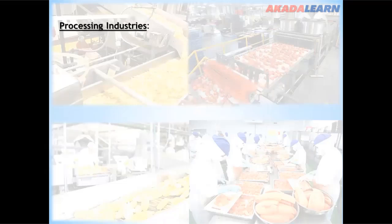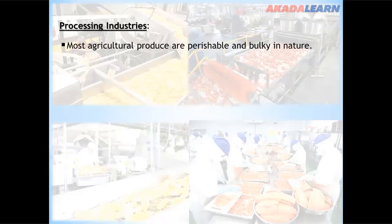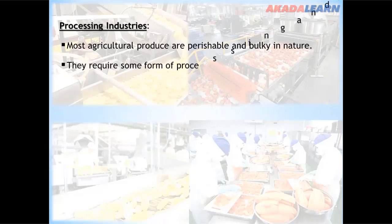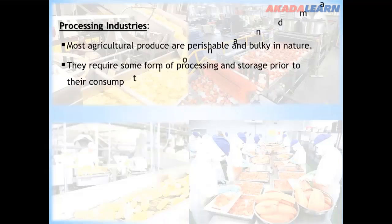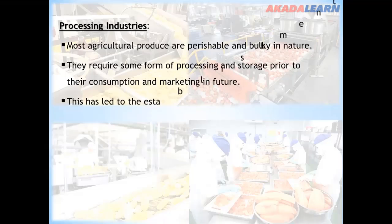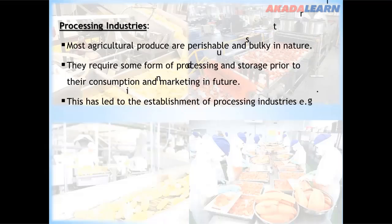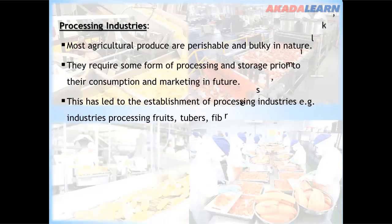In the processing industries, most agricultural produce are perishable and bulky in nature and have to be processed in order to be stored. They require some form of processing and storage prior to their consumption and marketing in future. This has led to the establishment of processing industries, for example industries processing fruits, tubers, fibers, milk, and more.